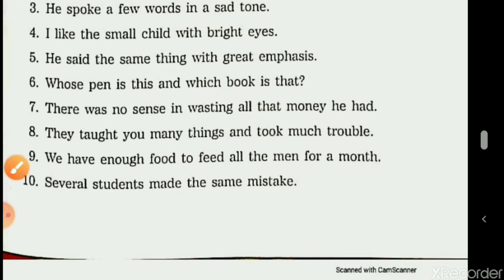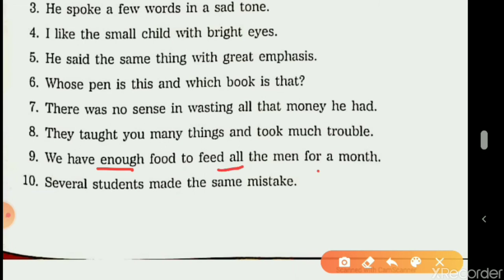The ninth sentence: 'We have enough food to feed all the men for a month.' 'Enough' describes 'food' — how much food? Enough — so it is adjective of quantity. 'All' describes 'the men' and 'a' describes 'month' — both answer 'how many,' so both 'all' and 'a' are adjective of number.